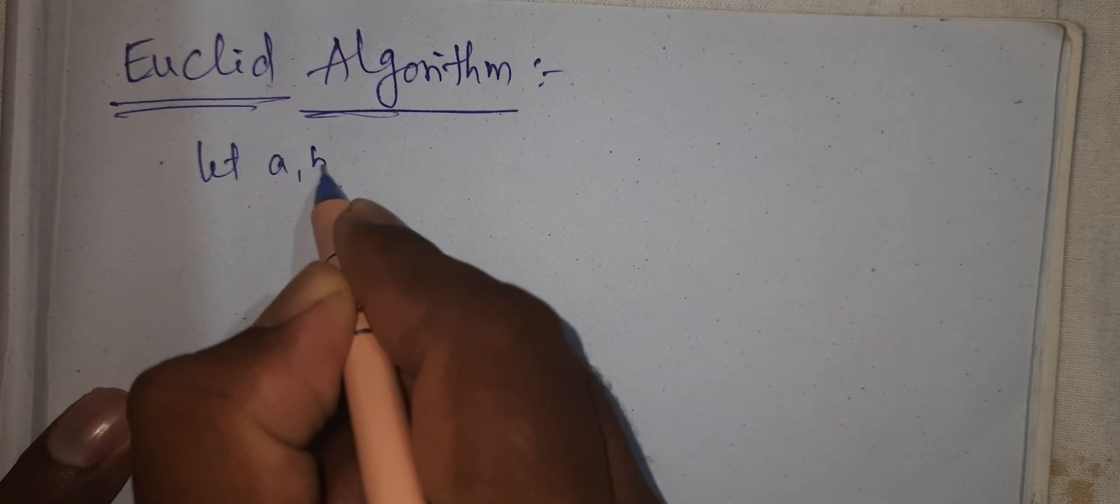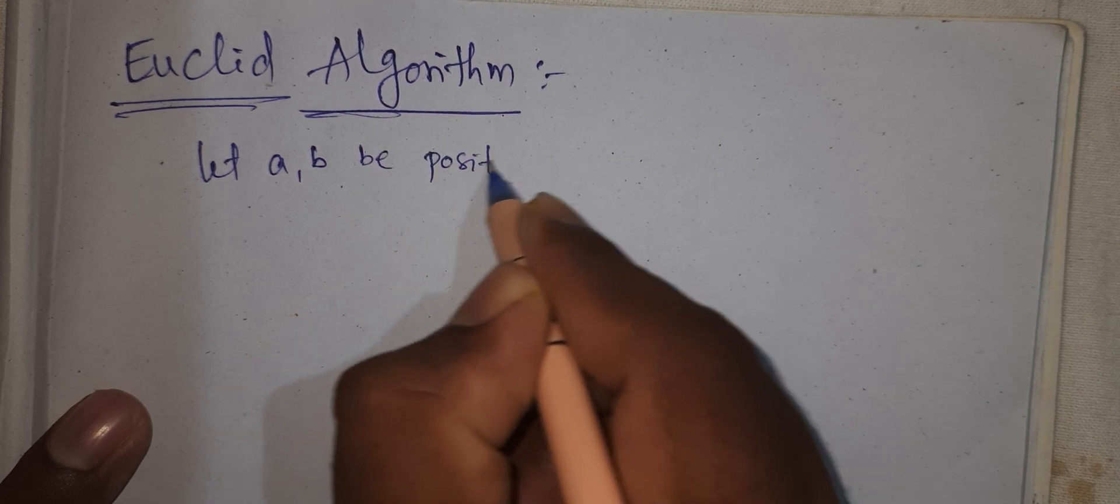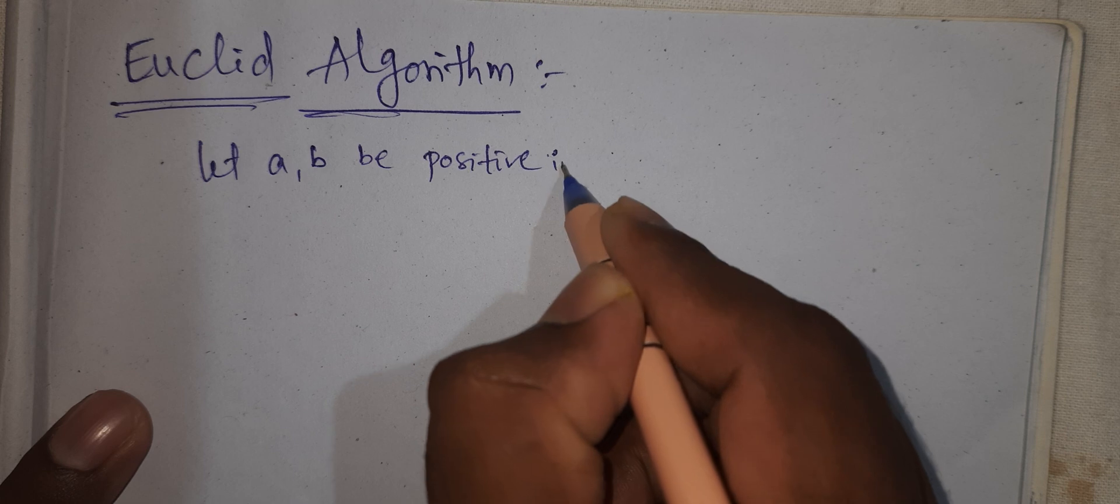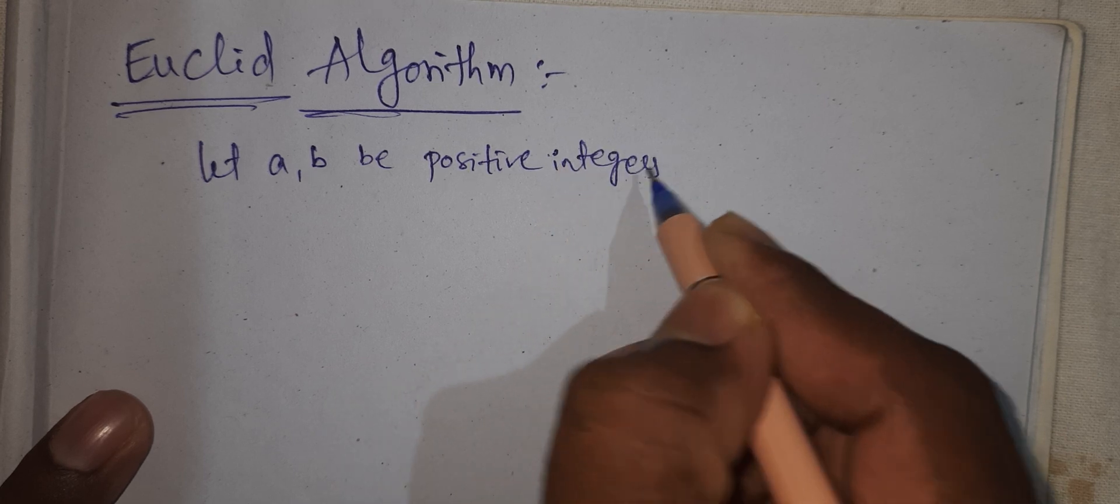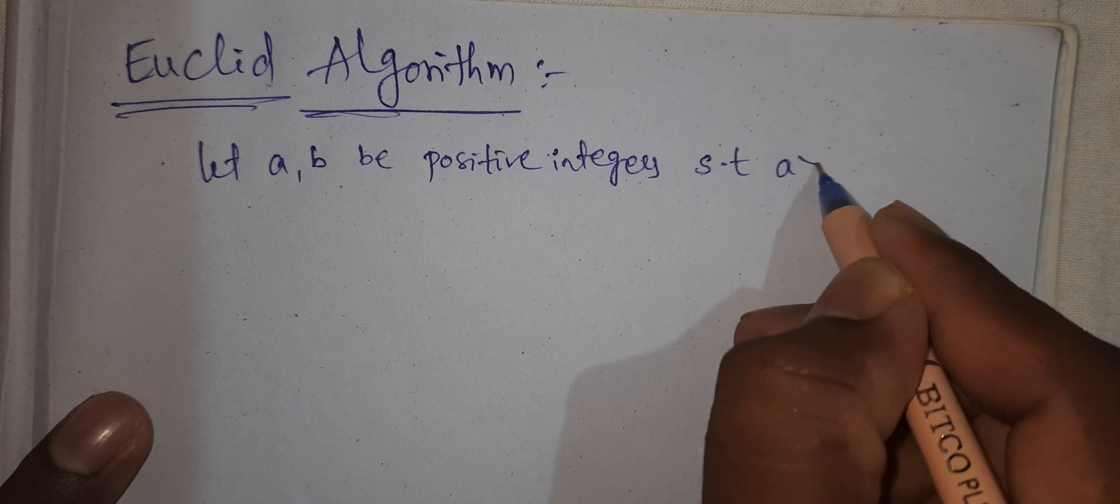Hi viewers, welcome to Rajesh Lekaloo. Today our topic is Euclid algorithm. Now see, let A, B be positive integers such that A greater than B.